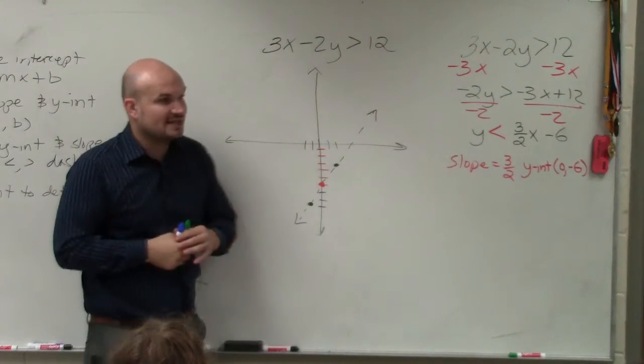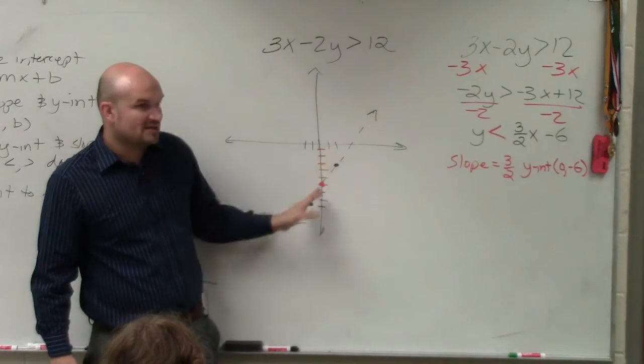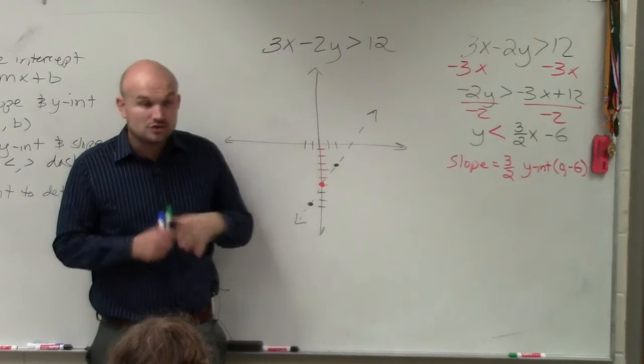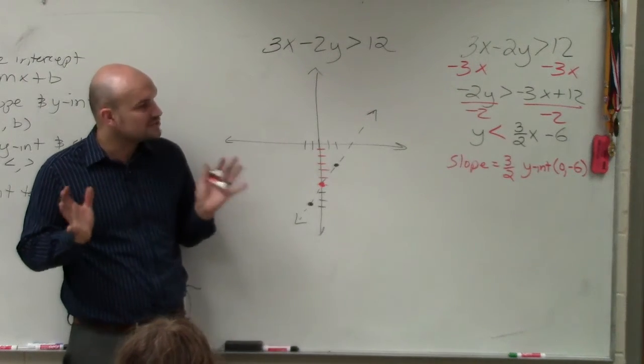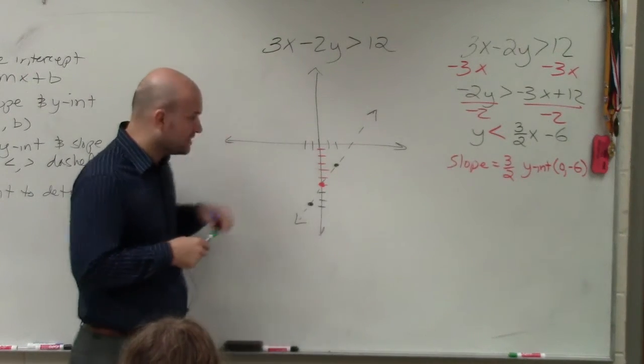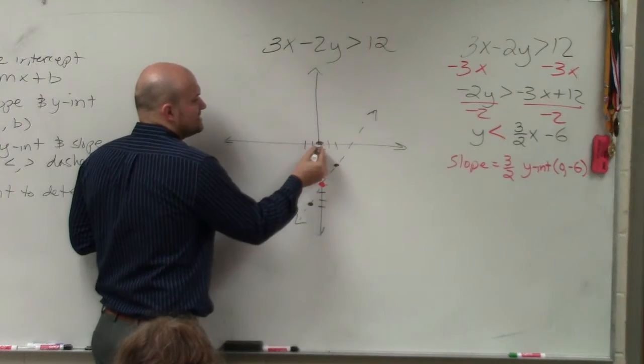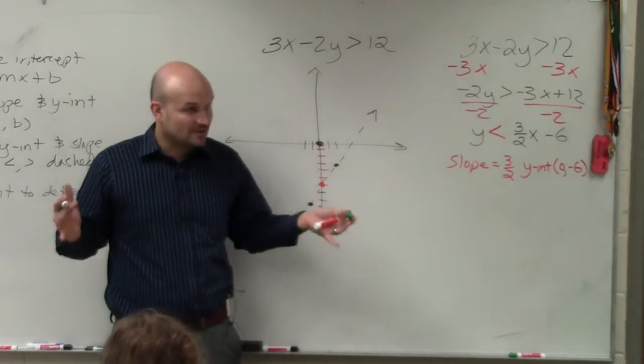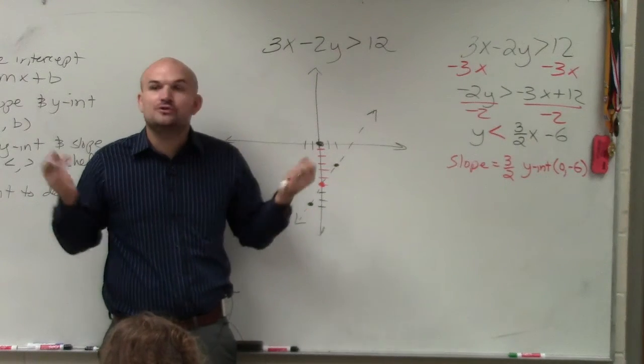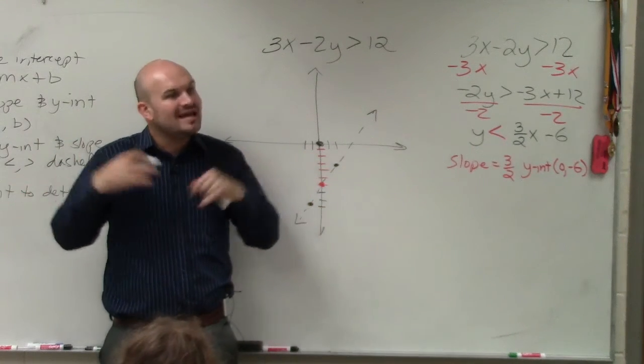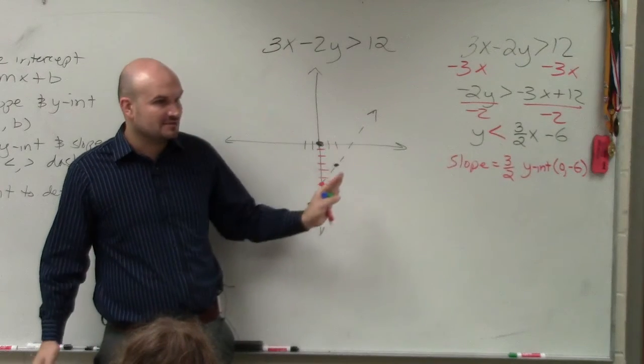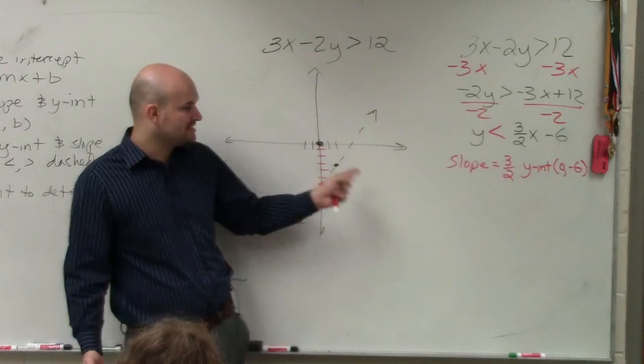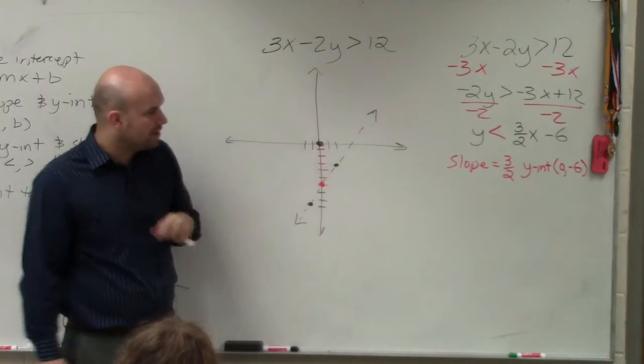So now, the next thing is, all the points that are on the line are not included in our solution. So then what is the solution? To do that, we're going to test our solution. We're going to choose a test point. And the best test point ever created, ever, was 0, 0. The reason why is just the math is very easy. You can choose any point you want to, as long as the point is not on the line. Because if the point's on the line, you're going to test the line. And we don't want to test the line. We want to test points that are either above or below.